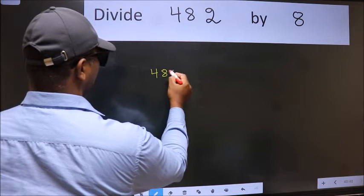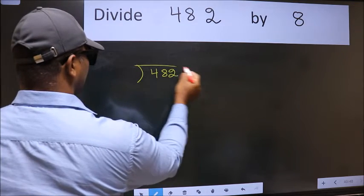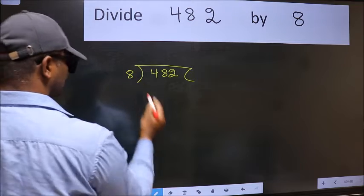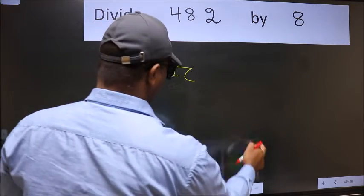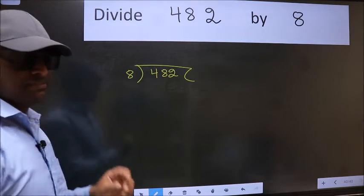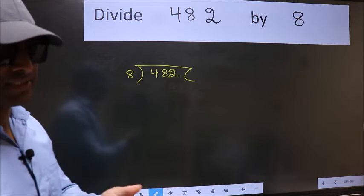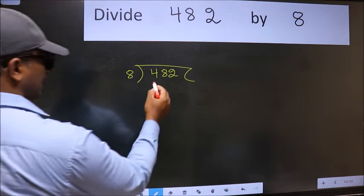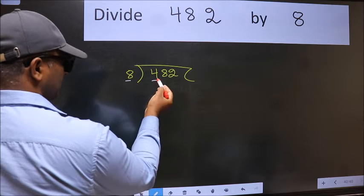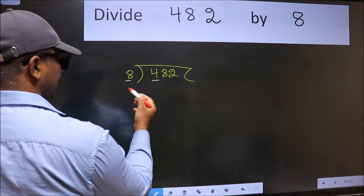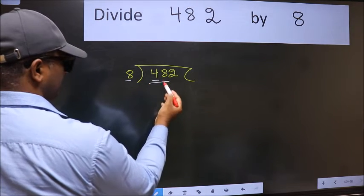482. 8 here. This is your step 1. Next, here we have 4 and here 8. 4 is smaller than 8, so take 2 numbers: 48.